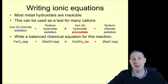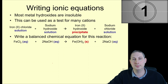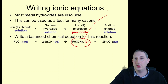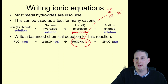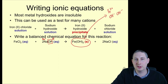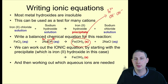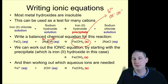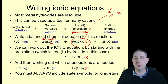To write the ionic equation, take the precipitate and work out what ions are in it. It's iron(II), so Fe²⁺, and there are two hydroxides. From NaOH, sodium is Na⁺ (group 1), so hydroxide must be OH⁻. Therefore the ionic equation is: Fe²⁺(aq) + 2OH⁻(aq) → Fe(OH)₂(s). Remember, you must always include state symbols for ionic equations.